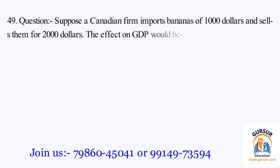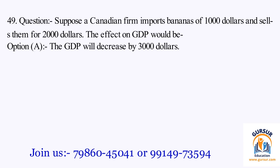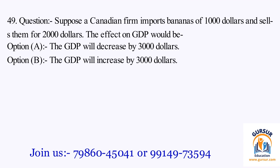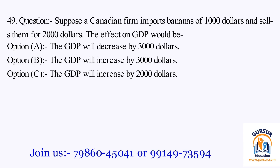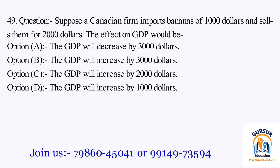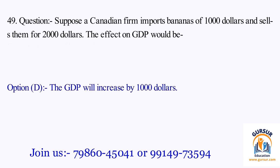Question number 49. Suppose a Canadian firm imports bananas of $1,000 and sells them for $2,000. The effect on GDP would be: Option A: The GDP will decrease by $3,000. Option B: The GDP will increase by $3,000. Option C: The GDP will increase by $2,000. Option D: The GDP will increase by $1,000. The right answer is Option D, that is the GDP will increase by $1,000.